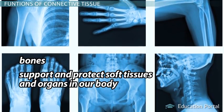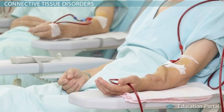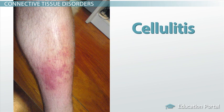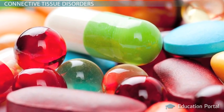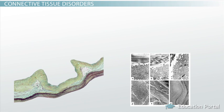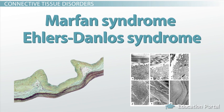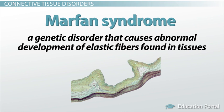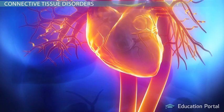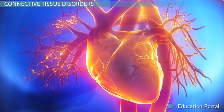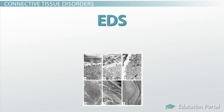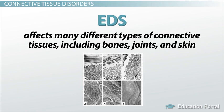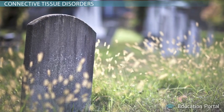There are over 200 disorders involving connective tissue. Some are inherited, but others are treatable. Cellulitis is an example of a treatable disorder; it happens when the subcutaneous layer of skin contracts a bacterial infection. It can be treated by antibiotics, but if left untreated, can be deadly. Two examples of inherited connective disorders are Marfan syndrome and Ehlers-Danlos syndrome. Marfan syndrome is a genetic disorder that causes abnormal development of elastic fibers found in tissues, and can be life-threatening because artery walls are weakened and the aorta has the potential to suddenly burst. Ehlers-Danlos syndrome, also known as EDS, encompasses many different types of diseases affecting bones, joints, and skin. These conditions are sometimes life-threatening, and there is no cure.